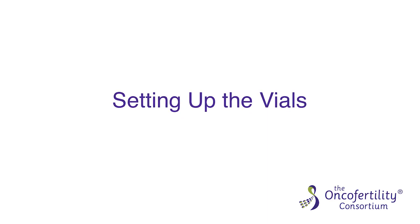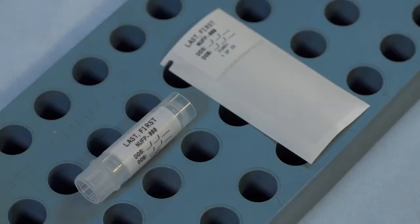Setting up the vials is the first step. It is recommended that you use a mechanical labeler because of the amount of information that needs to be on each label.